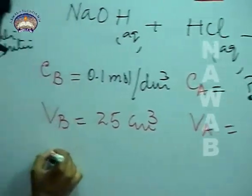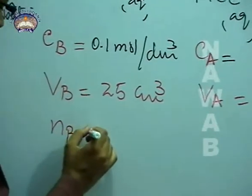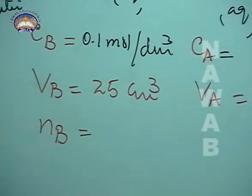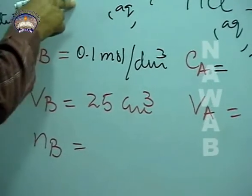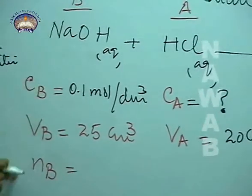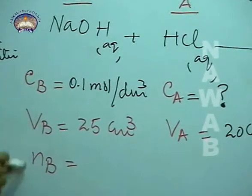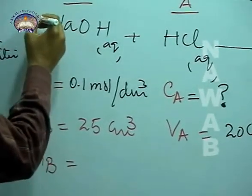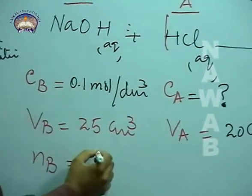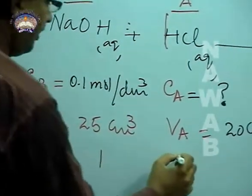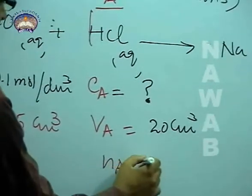Then Nb, number of moles of base. Remember, don't confuse this. Number of moles of base as appeared in the chemical equation. That is, you don't have to calculate number of moles from here. You have to see the equation from here, how it is balanced. The ratio is one. So number of moles of base will be one, and number of moles of acid will also be one.